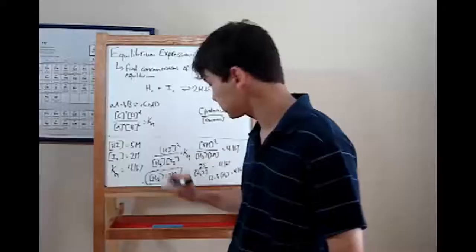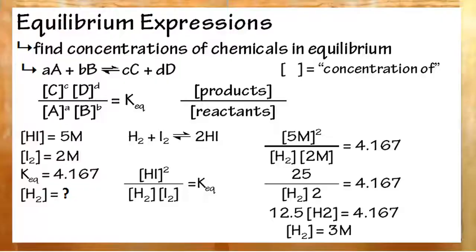And that's all there is to it. To recap, equilibrium expressions are used to find the concentration of a chemical in a reaction at equilibrium. This is your generic equilibrium reaction that you can see in textbooks. The capital letters represent any chemical in the reaction, and the lowercase ones represent the coefficients.